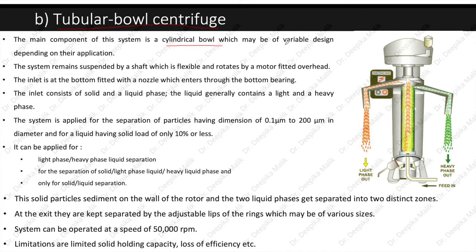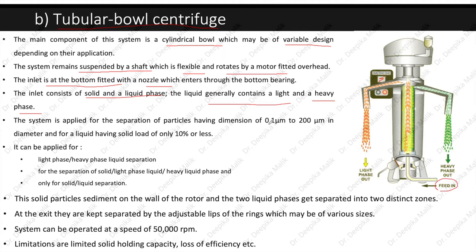The tubular bowl centrifuge has a cylindrical bowl of variable design depending on application. The system is suspended by a flexible shaft and rotated by an overhead motor. The inlet is at the bottom fitted with a nozzle through the bottom bearing. The inlet contains solid and liquid phases — generally a light and a heavy phase. It is applied for particles of 0.1 to 200 micrometers in diameter and for liquids with a solid load of only 10% or less. It can separate light and heavy liquid phases, as well as solids from liquid.